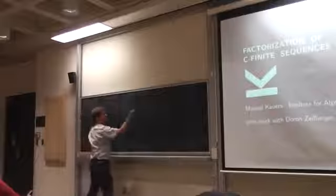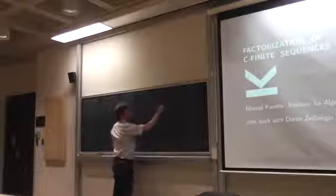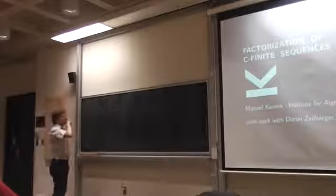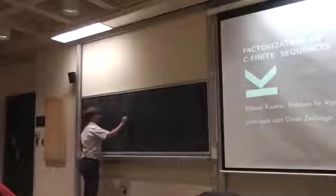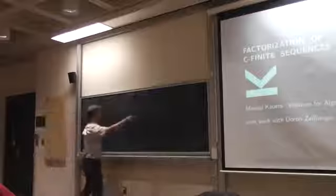Then we would say 17 is the order of the recurrence, and these are the coefficients. This doesn't uniquely specify the sequence, of course. You need initial values also. If you know F_0 equals 1, F_1 equals minus 13, up to F_16 equals 85, then these initial values together with the coefficients of the recurrence uniquely determine all the sequence terms.